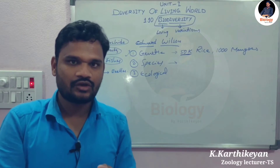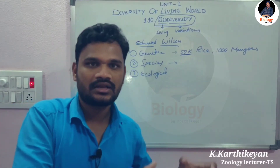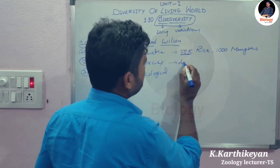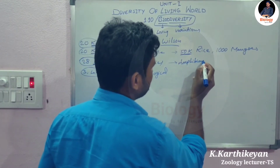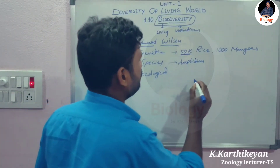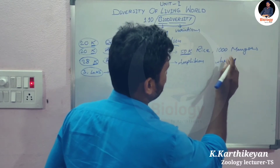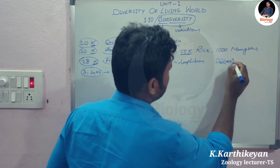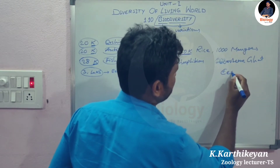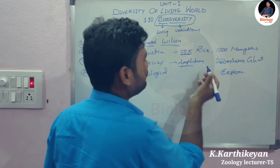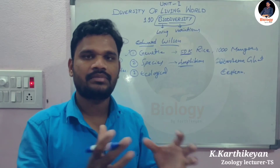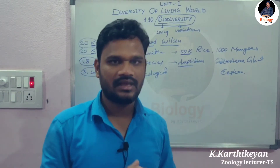Species biodiversity means variations in living organisms present at the species level. For example, amphibian species are more numerous in the Western Ghats than in the Eastern Ghats, meaning the number of amphibian species is higher in the Western Ghats compared to the Eastern Ghats.